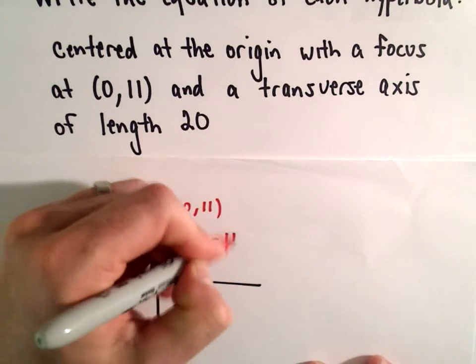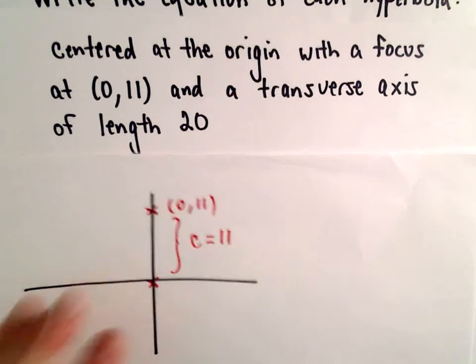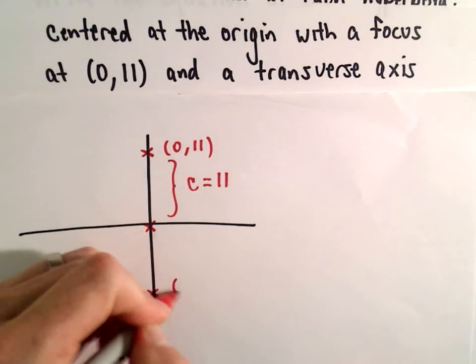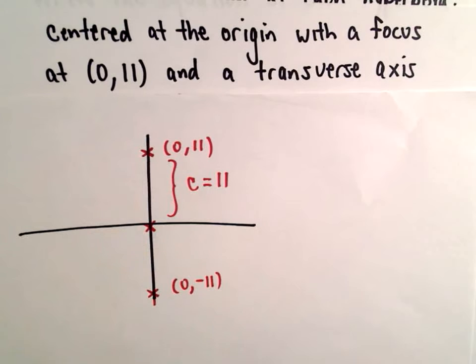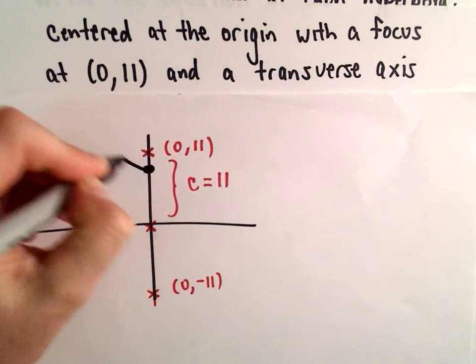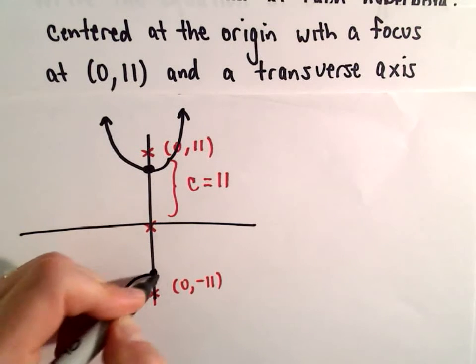So in this case, c is going to have the value 11. Since one of the foci is at (0,11), I can say that the other one is at (0,-11). That tells me that my vertices are going to be somewhere along the y-axis.